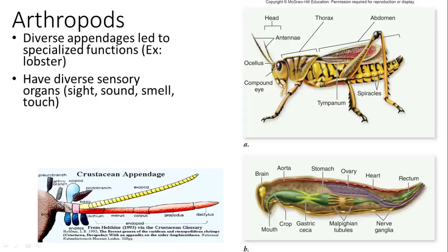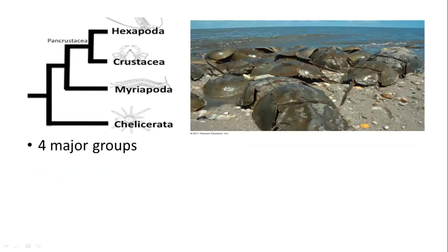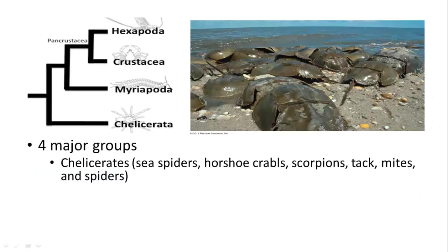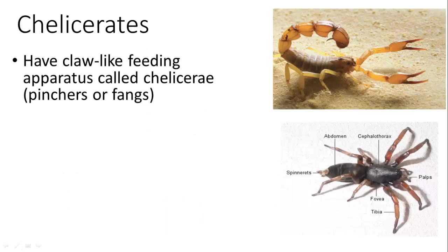Arthropods have a diversity of sensory organs for sight, sound, smell, and touch — antennae are very sensitive for touch. Gas exchange occurs through gills, lungs, tracheal systems, or diffusion through spiracles. There are four major groups: chelicerates, myriapods, hexapods, and crustaceans.